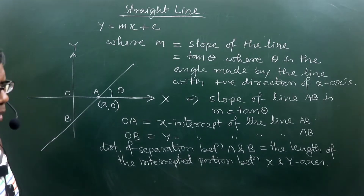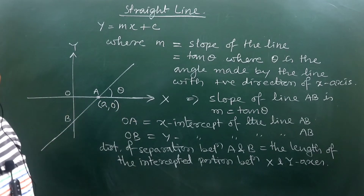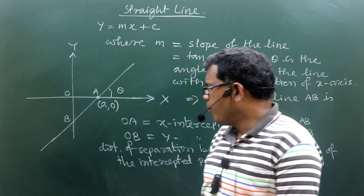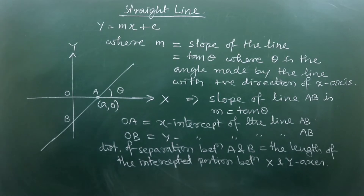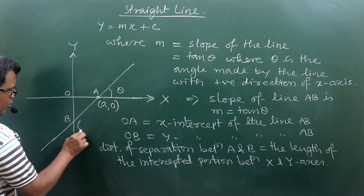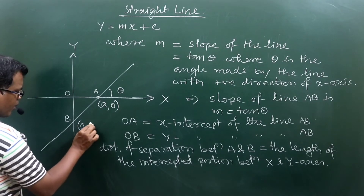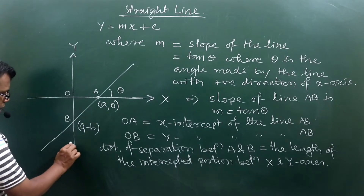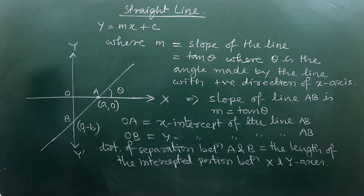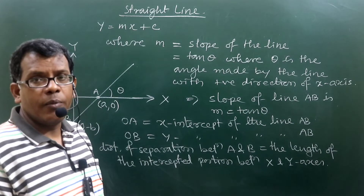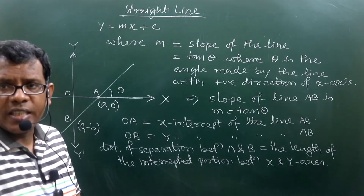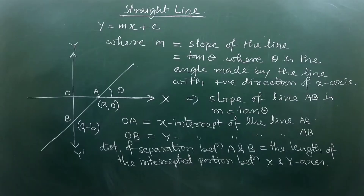The coordinates of the x-intersecting point A are identified with its x-intercept value and y equals zero, because any point on the x-axis has its y-coordinate as zero. Similarly, any point on the y-axis has its x-coordinate as zero. So the x-coordinate of B is zero, but the y-coordinate is written as minus b, because the y-intersecting point lies on the negative y-axis — below the origin.